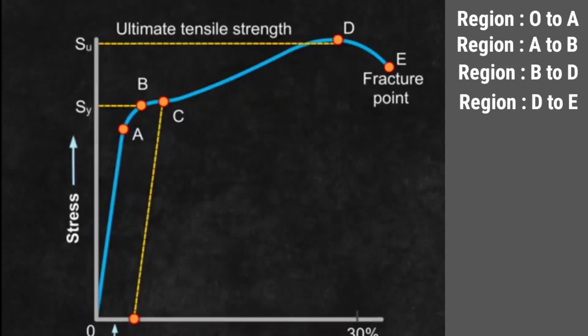If the ultimate strength and fracture point are far apart, then such materials are called ductile materials. Examples are aluminum, copper, steel, etc.